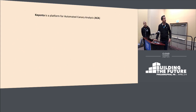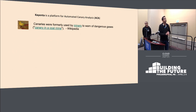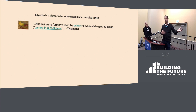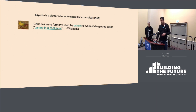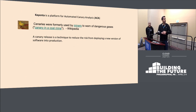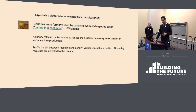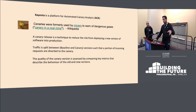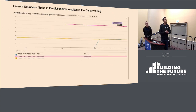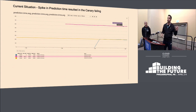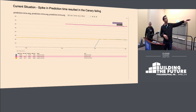Kayenta is a platform for automated canary analysis. Canaries were formerly used by miners to warn of dangerous gases in mines — you can relate this to putting a new version into production, seeing whether it's okay to run in a production environment, and if it fails, shutting it down quickly. A canary release is a technique to reduce the risk of deploying a new version into production. In this case, developers introduced a deep learning algorithm that caused prediction time to spike from 200 milliseconds to over 600 milliseconds — that's how the canary failed.